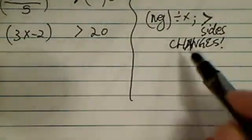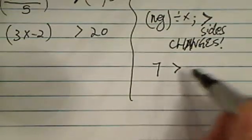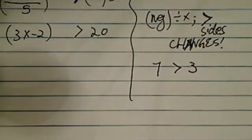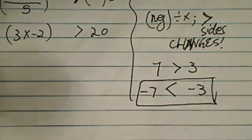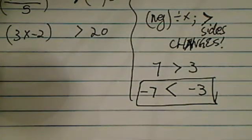Here's why. If you have 7 that's bigger than 3, and you multiply by minus 1, this becomes minus 7 and this becomes minus 3. You have to change the sign to keep this a true statement. So remember, when you're dealing with multiplying and dividing negative numbers, the inequality flips on itself.